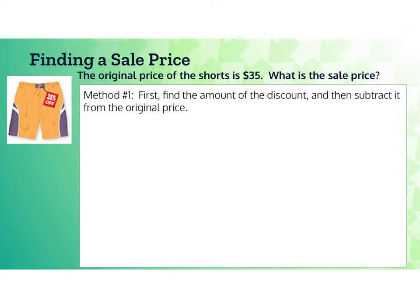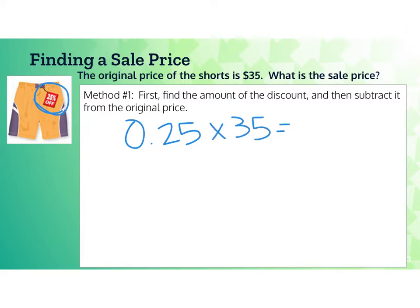There are a couple of different ways to do this. In the first method, we'll find the amount of the discount first and then subtract that from the original price. The shorts were marked down 25%. When solving with percent, we want to change the percent to a decimal. So we do 0.25, or 25 hundredths, multiplied by 35. That gives us the amount of the discount.